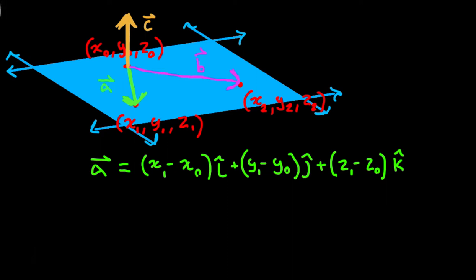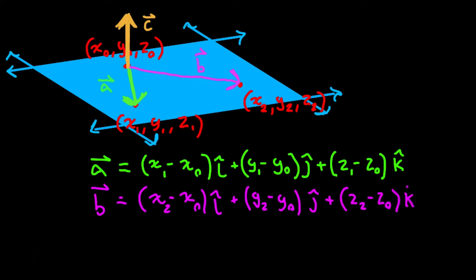Let's do it for b now. b, on the other hand, is going to be (x2 - x0) in the x direction plus (y2 - y0) in the y direction, and (z2 - z0) in the z direction.